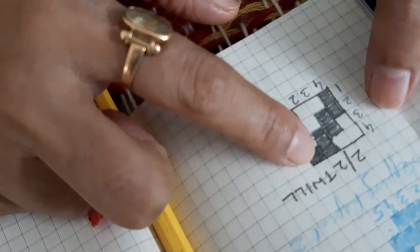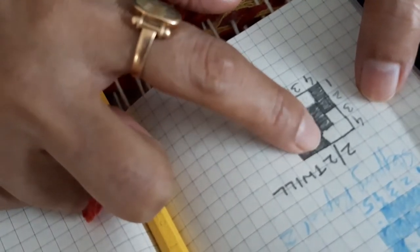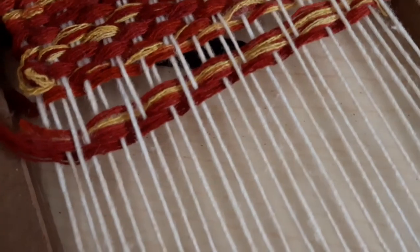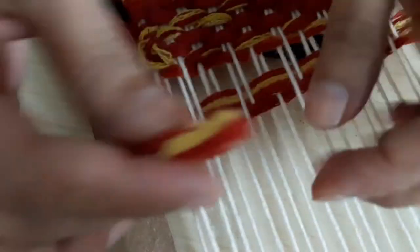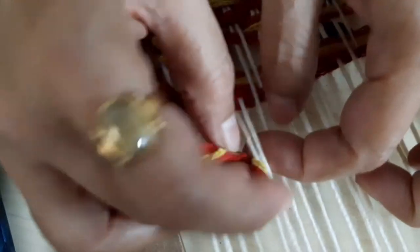In the fourth pick, one and two are up. So all one and two, one and two, one and two.